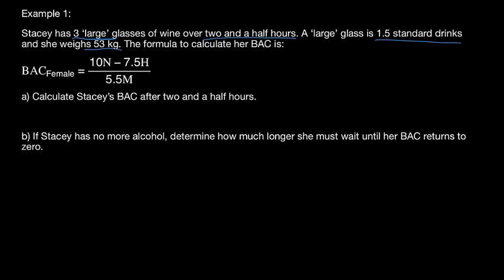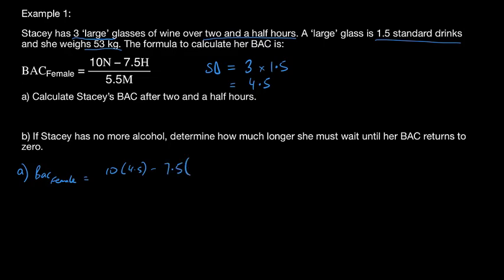Her weight is 53 kilograms, the time is 2.5 hours. For standard drinks: she had three glasses and each glass had 1.5 standard drinks, so that works out to 4.5 standard drinks total. Putting that into the formula for part (a): BAC = (10 × 4.5 − 7.5) ÷ (5.5 × 53). Wait — the numerator is (10 × 4.5 − 7.5 × 2.5) and denominator is 5.5 × 53. That calculates to 0.094.